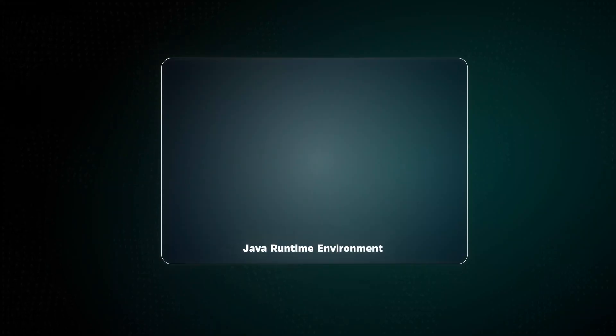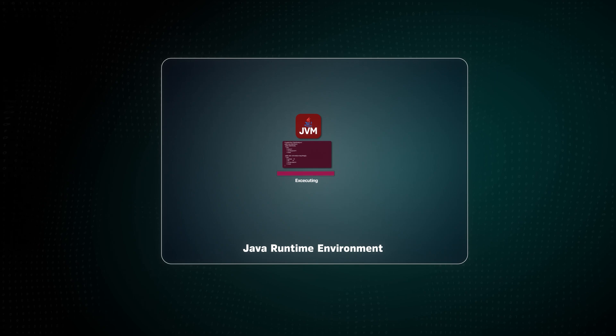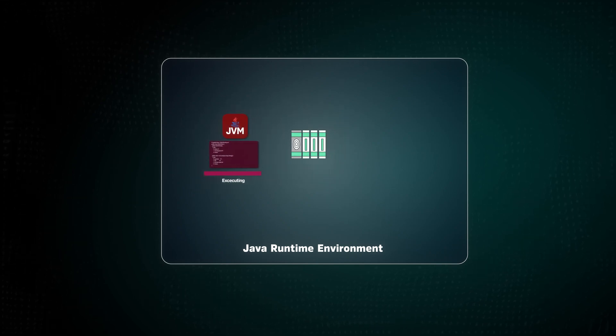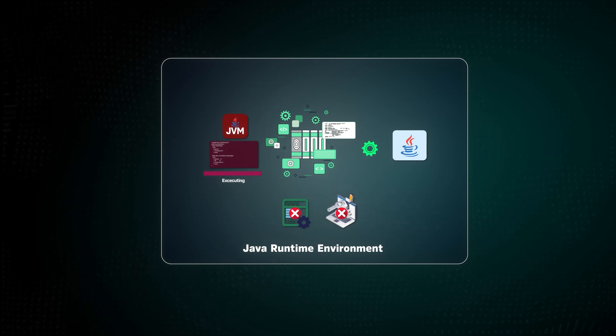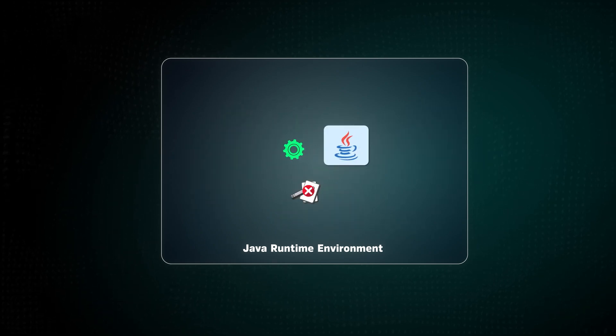Another term you'll hear often is the JRE, or the Java Runtime Environment. If the JDK is for developing Java applications, the JRE is for running them. The JRE includes the JVM, which executes the Java bytecode, and core libraries that provide everything needed to run the application. However, it does not include a compiler or development tools, because it's designed only for running Java applications and not writing or compiling them. This is why servers or production machines usually have the JRE instead of the full JDK — they don't need the extra tools meant for development.